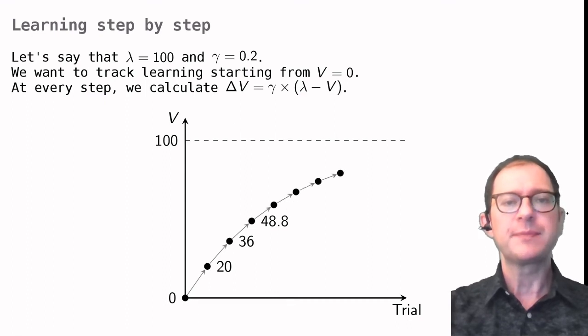We can do this a number of times, and as you can see, at each step, the error gets smaller, which means that the change in V also gets smaller, because it's proportional to the error.